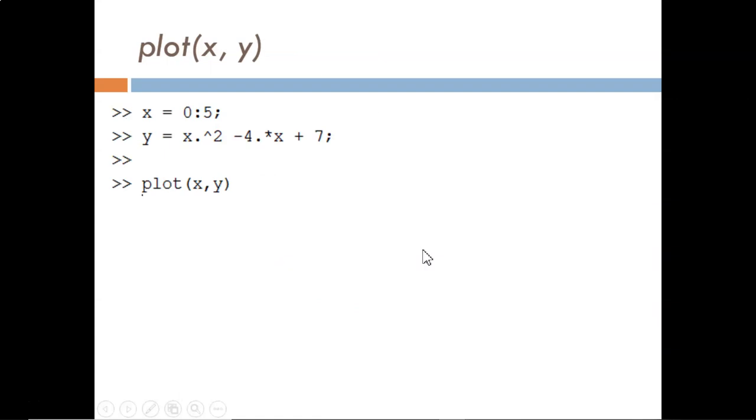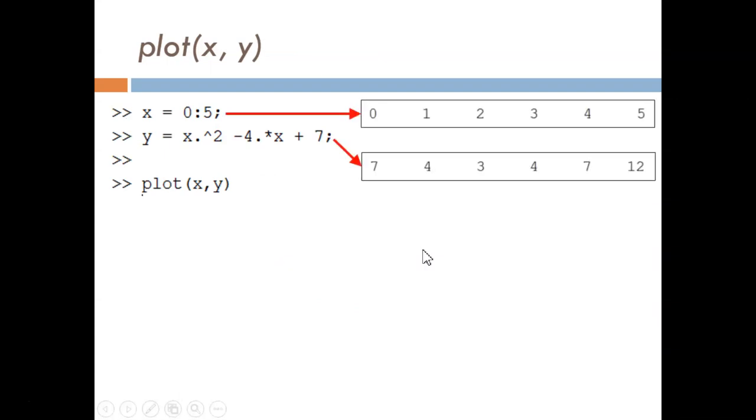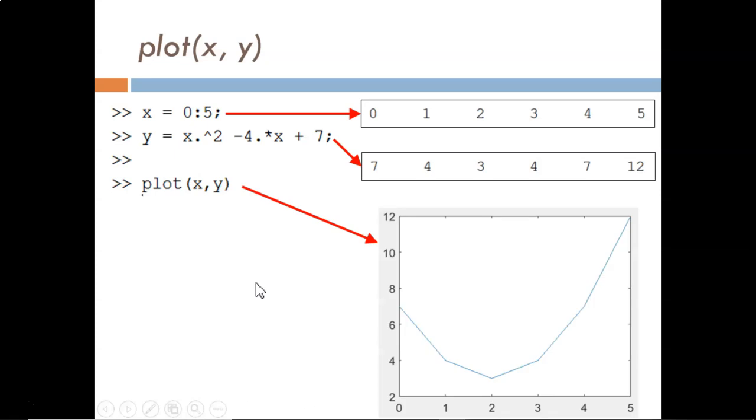First, we define x, which represents the independent variable. x gets created as a vector holding these six values. From x, we then compute y. This is an element-by-element computation, so each value in y is computed individually from the corresponding value in x. Now that x and y are defined, we use the function plot to create the figure shown here.